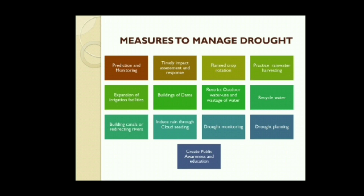Measures to manage drought include prediction and monitoring, timely impact assessment and response, crop rotation practice, rainwater harvesting, expansion of irrigation facilities, building of dams, restricting outdoor water use, restricting wastage of water, recycling water, building canals or redirecting rivers, inducing rain through cloud seeding, drought monitoring and planning, and creating public awareness and education.